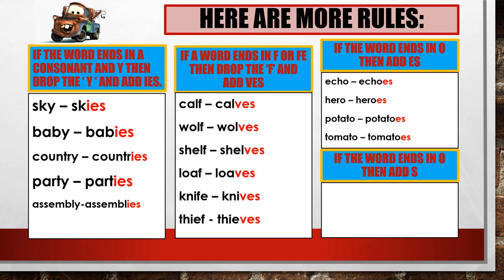Here are more examples of words ending in O, but here you just add S. One piano, many pianos. One photo, many photos. One radio, many radios.